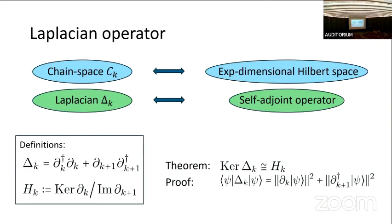We're asking about the ground space of this Laplacian operator. We've rephrased the question of whether there's a hole in terms of things that look more quantum mechanical. However, there's not really a notion of locality or tensor product structure here — the Hilbert space is like a span of the cliques in this graph.